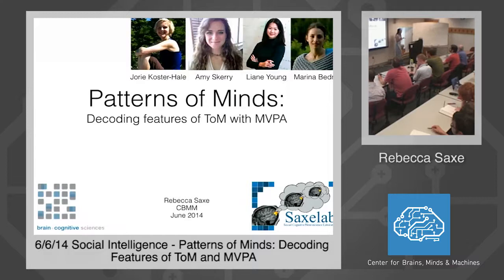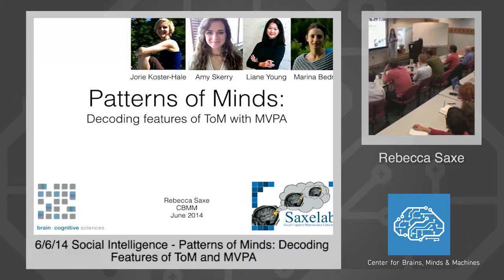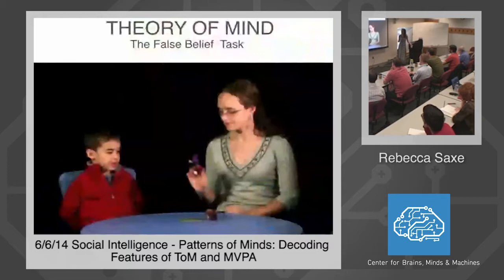To set the stage: the beginning of theory of mind research as a problem in developmental psychology, cognitive psychology, and eventually cognitive neuroscience starts with a task called the false belief task, which was the original litmus test for studying kids' developing ability to think about other minds. I'm going to show you a child being given a false belief task — this is a five-year-old.